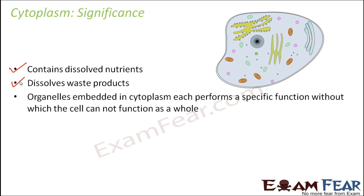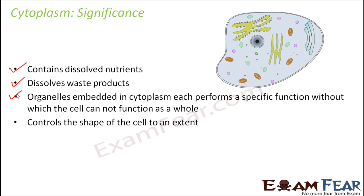Organelles embedded in the cytoplasm perform specific functions without which the cell cannot function as a whole. Some provide energy to the cell, some help in storage of food material, some help in packaging of food material — each has a different purpose but all are very important, and even without any one of them the cell will not survive. Cytoplasm also controls the shape of the cell to an extent, because if the amount of fluid changes, the shape of the cell may vary.